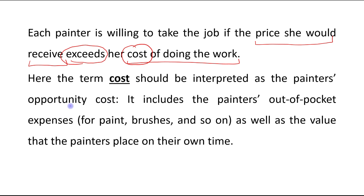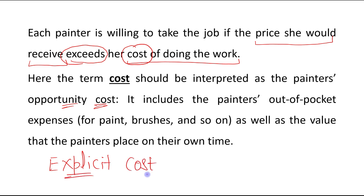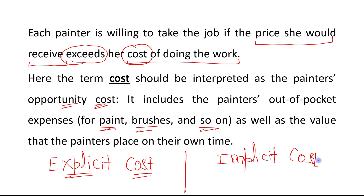This cost means the painter's opportunity cost. When we talk about cost, there are two types. One is explicit cost, which includes all the monetary expenses — for example, for paint, brushes and so on. The other is implicit cost, which is basically the opportunity cost: the value that the painters place on their own time, because that time could have been used for other purposes. So that is the implicit cost, the opportunity cost.